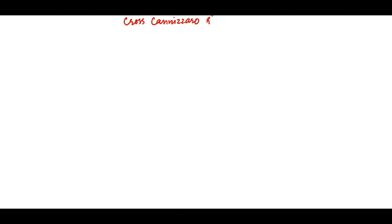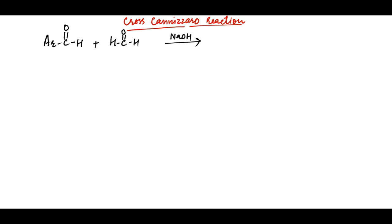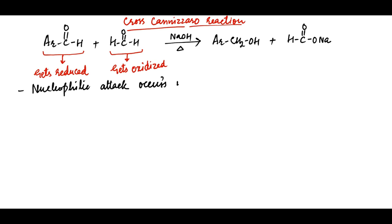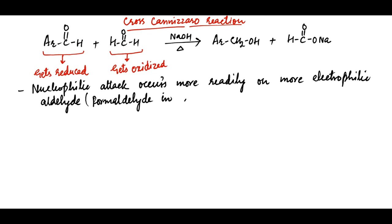When formaldehyde undergoes cross-Cannizzaro reaction with other aldehydes not having alpha-hydrogens, it is seen that formaldehyde is oxidized to sodium formate and the other aldehyde is reduced to the corresponding primary alcohol. Thus, out of the two aldehydes, the nucleophilic attack occurs more readily on the more electrophilic aldehyde — formaldehyde in this case.